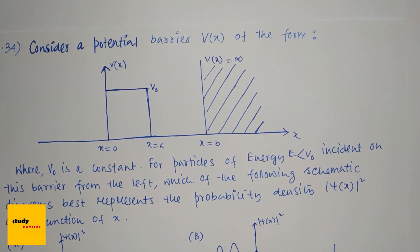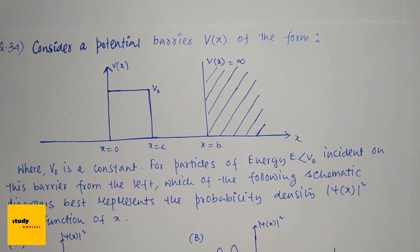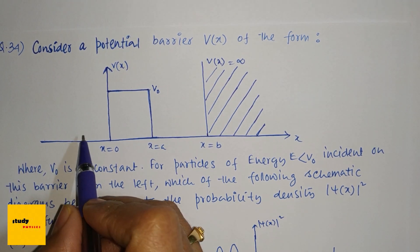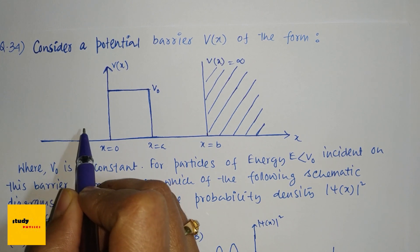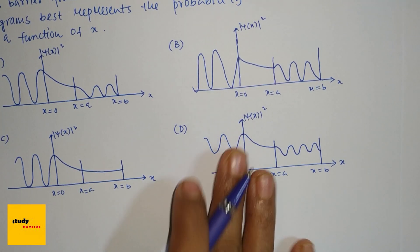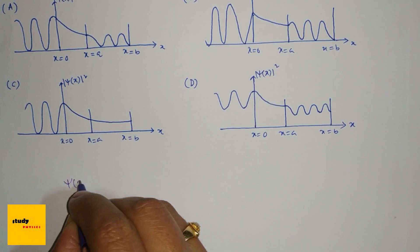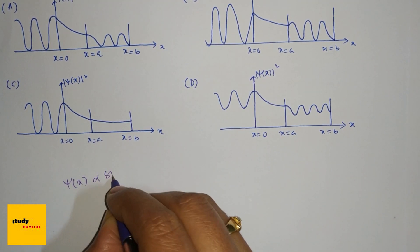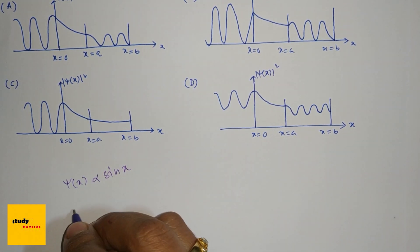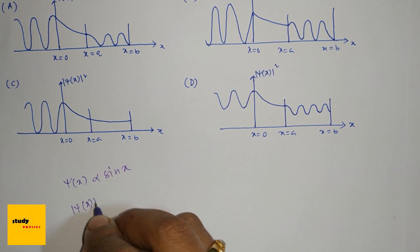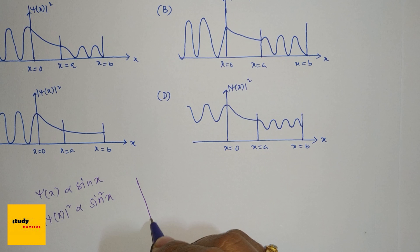So first of all, let's see this. Here we can see that this is a free space. We know that in free space, particles oscillate. So if our function is ψ(x) proportional to sin(x) or cos(x), then the probability density |ψ(x)|² is proportional to sin²(x). And we know sin(x) is...